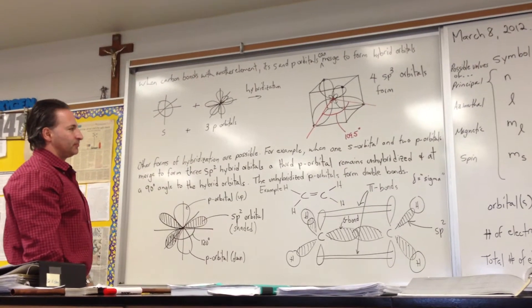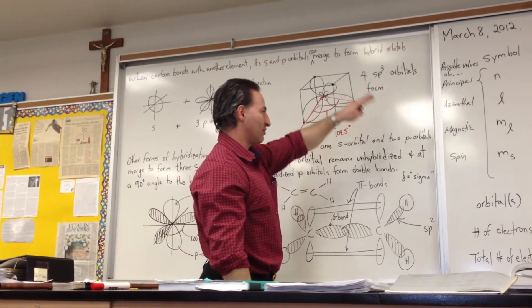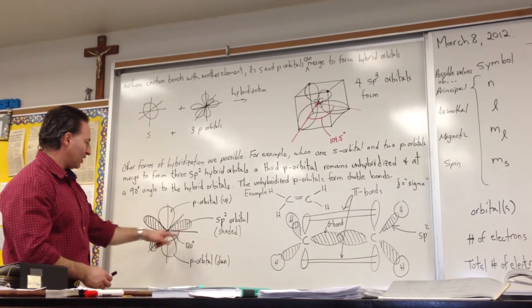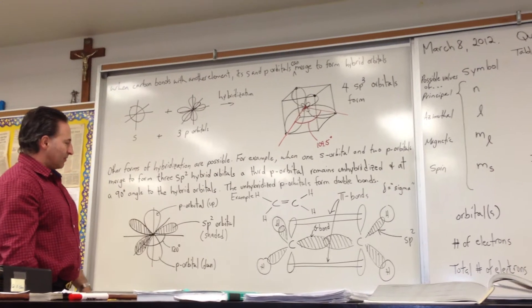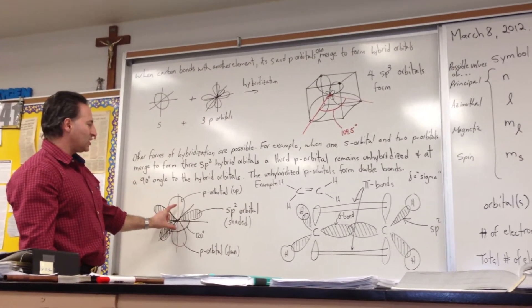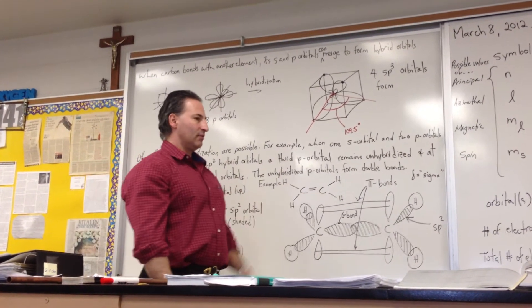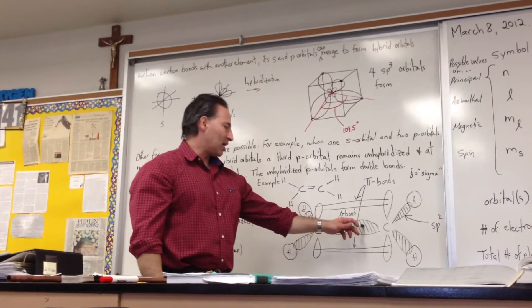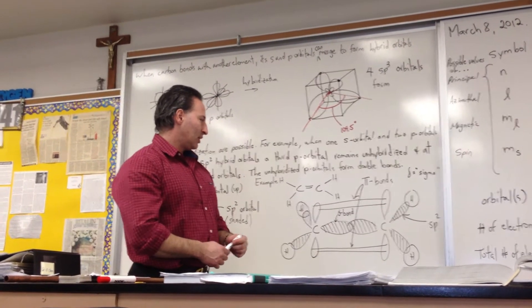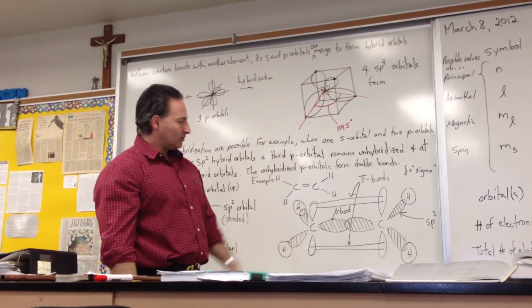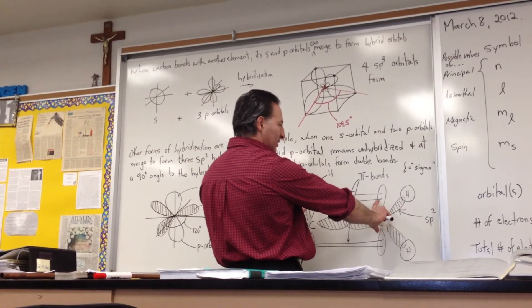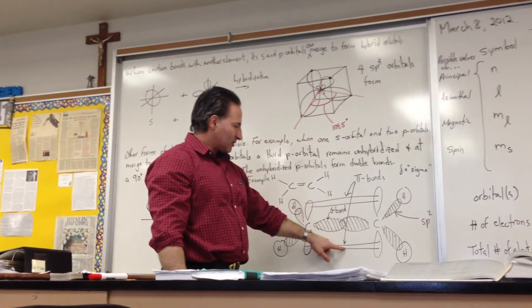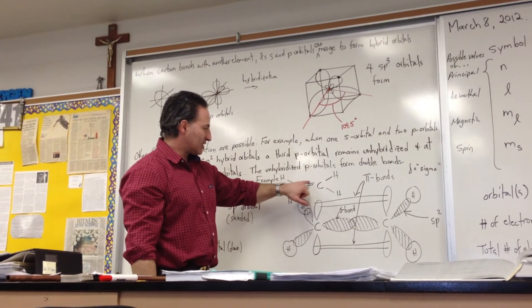Other forms of hybridization are possible. For example, when you take one s orbital and two p orbitals instead of three, they merge to form three sp2 hybrid orbitals, where the angles between them are 120. That leaves one of the orbitals unhybridized. And that p orbital is still capable of bonding. So you see sp2 hybridization whenever carbon is double bonded. You see an example of sp2 hybridized carbon in ethylene, where you see the sigma bonds, these shaded orbitals, one of the sp2 hybrids. And the unhybridized p orbital in both carbon atoms is still pointing up and down, and they have overlap sideways. That sideways overlap creates what's called a pi bond. So two of these overlaps equals one bond. So this molecule has a sigma bond and a pi bond.